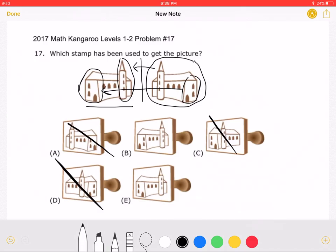As we can see, answer choice B is incorrect because the door is on the wrong side. That means answer choice E must be correct.